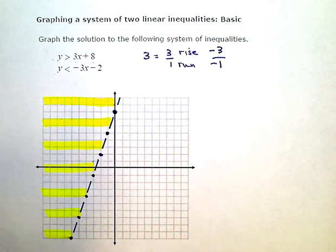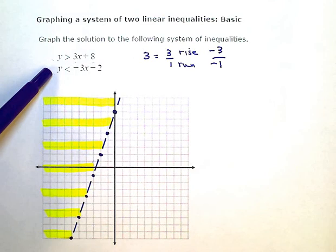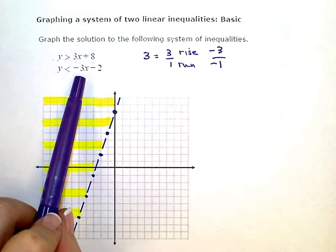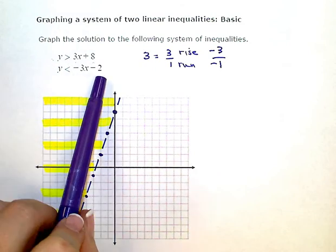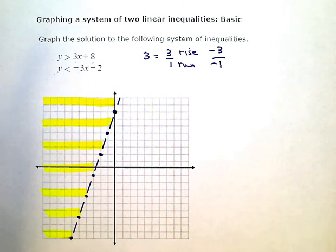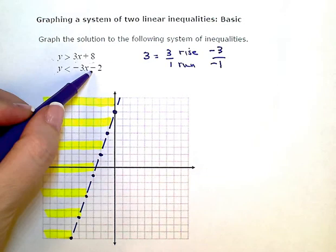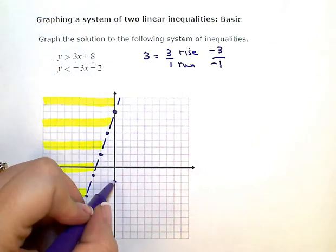Then I'm going to go to this inequality and do exactly the same process. So it's already solved for y. That's step one. Step two, use your slope of negative three and y-intercept of negative two to line up some dots or plot some points on our grid here. So this time, my y-intercept is negative two. So I'm going to start here.